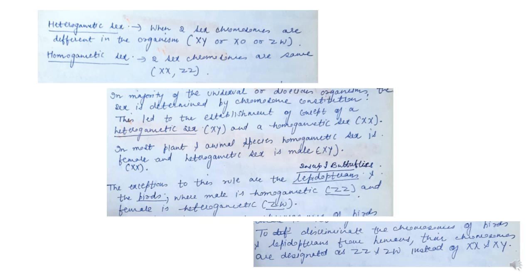In the majority of unisexual or dioecious organisms, the sex is determined by chromosome constitution. This has led to the concept of heterogametic sex, where two different sex chromosomes are present, and homogametic sex, where two same sex chromosomes are present. In most plants and animal species, homogametic sex is female and heterogametic sex is male, with females having XX and males having XY chromosomes.